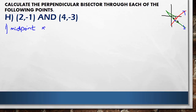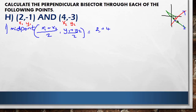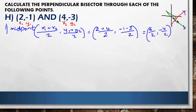First part: the midpoint. That's x1 plus x2 over 2 and y1 plus y2 over 2. Labeling our points — x1 y1 and x2 y2 — something many of you are not doing, which causes errors in substitution. My x1 is 2, x2 is 4, divided by 2. My y1 is minus 1, y2 is minus 3, divided by 2. That gives 6 over 2 and minus 4 over 2, so the midpoint is (3, -2).